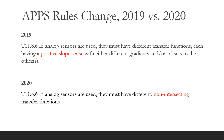I want to compare the rules between 2019 and 2020. In 2019 positive slopes were specified, but that has been removed in 2020 and now they just need to be non-intersecting. The only way two lines can be truly non-intersecting is to have the same slope, but I don't think this rule is forcing us to adopt the same slopes for the two APPS transfer functions. My interpretation is that the two transfer functions should not intersect within the valid range of pedal travel, i.e., within the 0 to 100 range — but I do stress that this is my interpretation.